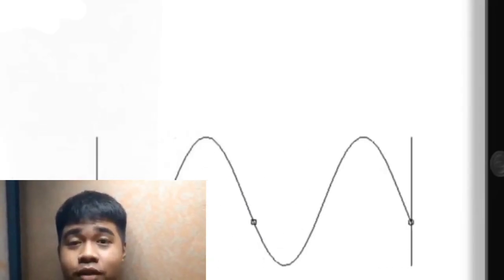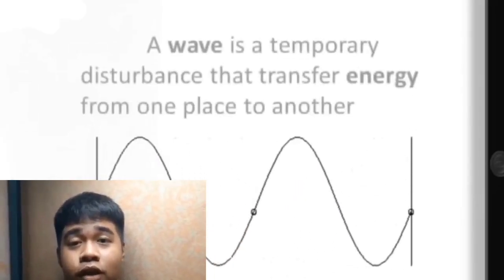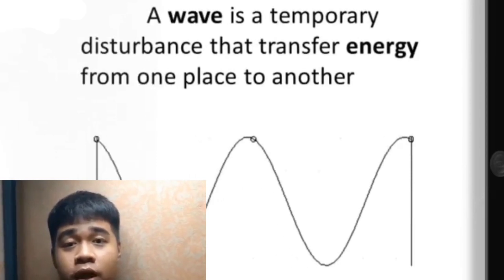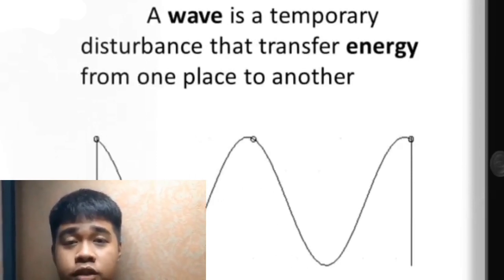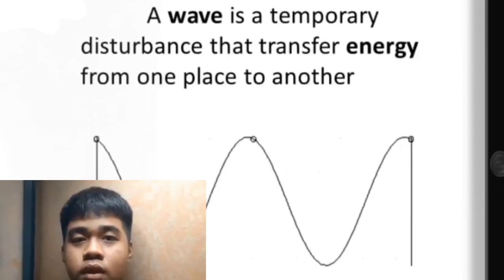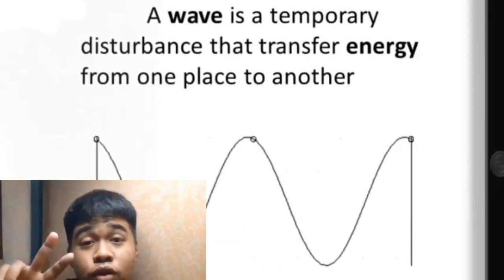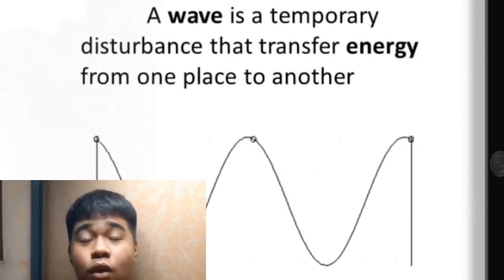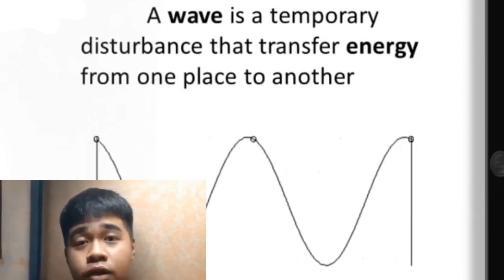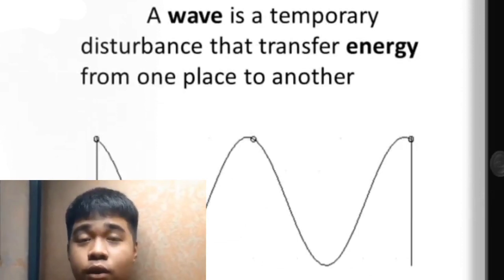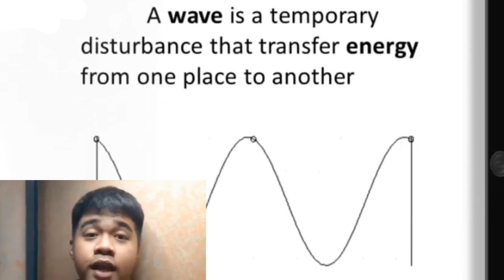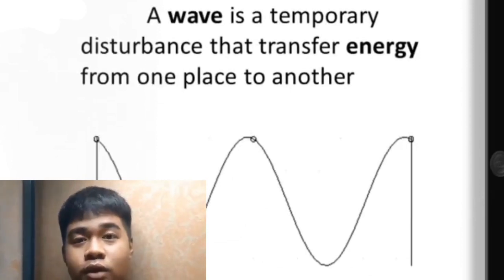Let us refresh our mind. We've learned that waves are temporary disturbances that transfer energy from one place to another. There are two important ways energy is transported in the world around us: mechanical waves and electromagnetic waves.